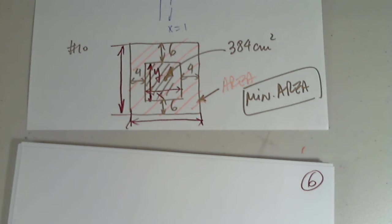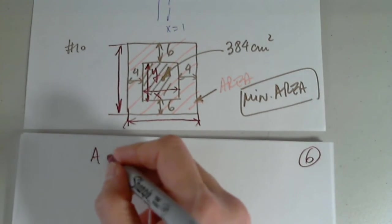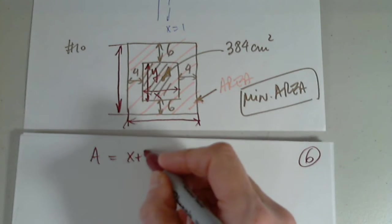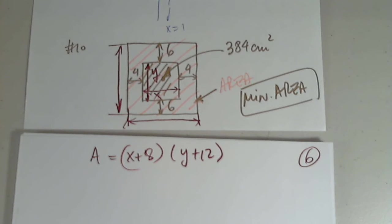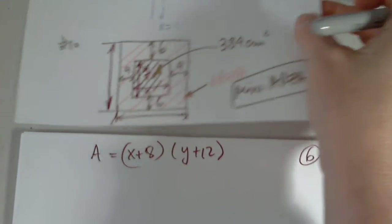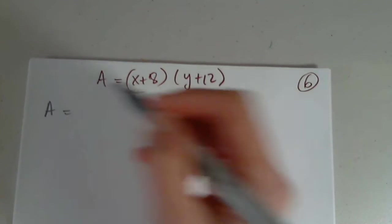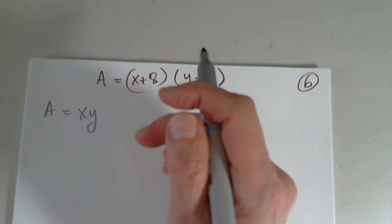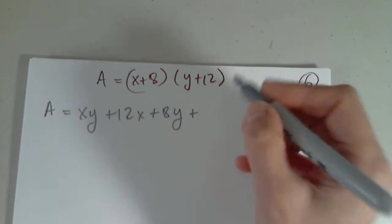8 plus x times 12. Excellent. Very good. So the area of the poster will be, indeed, x plus 8 times y plus 12. Do we all agree with that? Is that a yes?